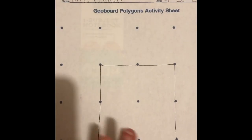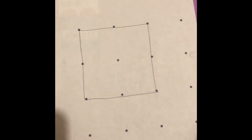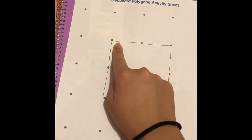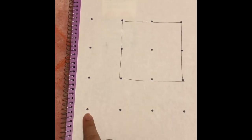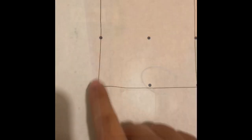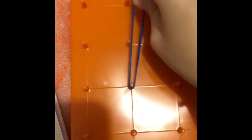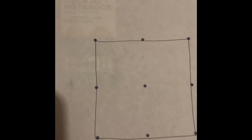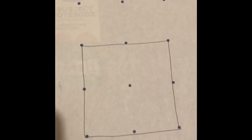Once they have their polygon on the activity sheet, they'll use the actual geoboard to recreate it with rubber bands. I decided to do a quadrilateral, and I did it in the middle of the activity sheet. So we start from the middle — we go up two with the rubber band, then we go out two to the side, and notice how we have a different type of polygon. Then we go down two.